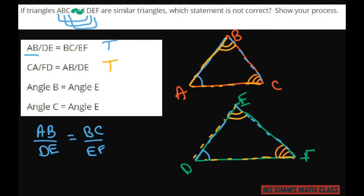Now let's look at the angles. Angle B matches up to E, but for this one, angle C matches up to F. It's not E. This should be F. So this is false.